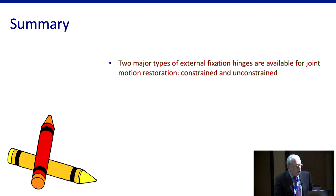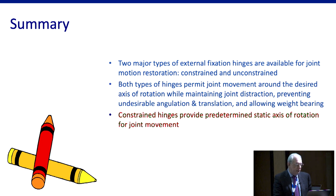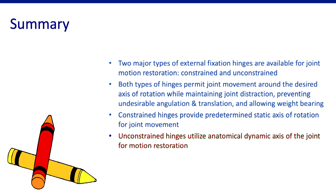In summary, there are two major types of external fixation hinges available to restore joint motion and move segments. They are constrained and unconstrained. Both types permit joint movement around the desired axis of rotation while maintaining joint distraction, preventing undesirable angulation and translation, and allowing weight bearing. Constrained hinges provide a predetermined static axis of rotation for joint movement, while unconstrained hinges utilize the anatomical dynamic axis of joint rotation for correction of deformities.